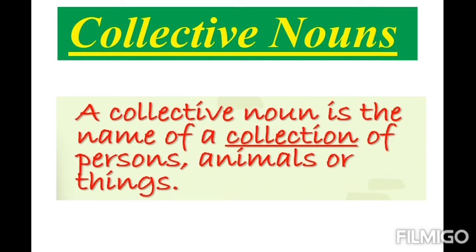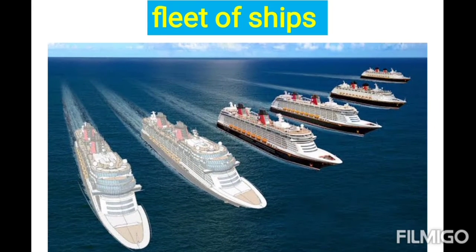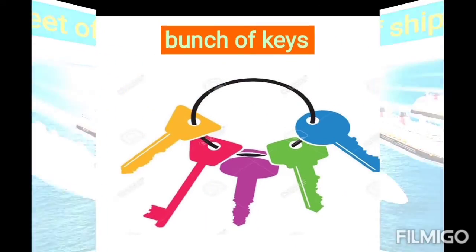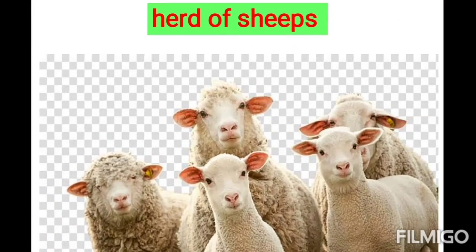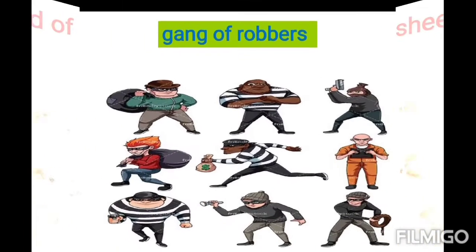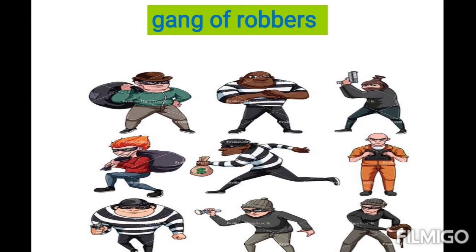Let's see about collective nouns. A collective noun is the name of a collection of persons, animals, or things. For example: fleet of ships, bunch of keys, herd of sheep, and gang of robbers. These are names given to groups that share the same characteristics or qualities.